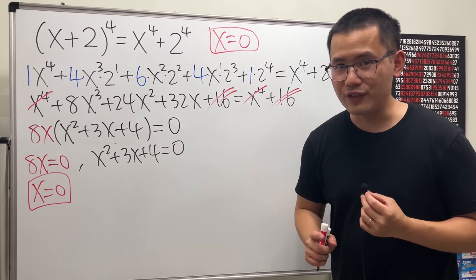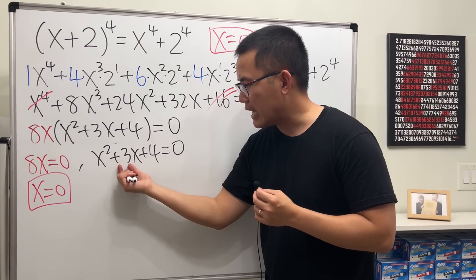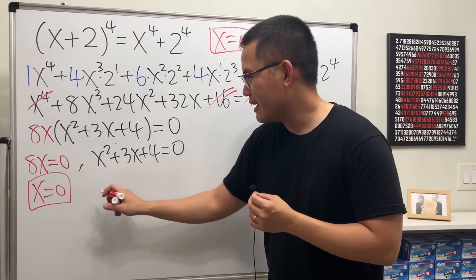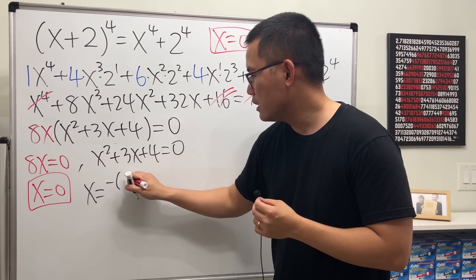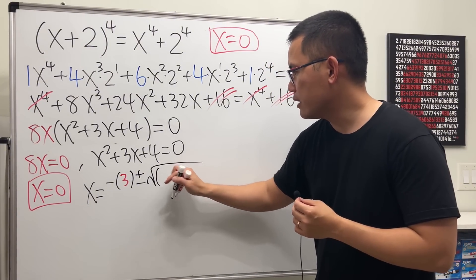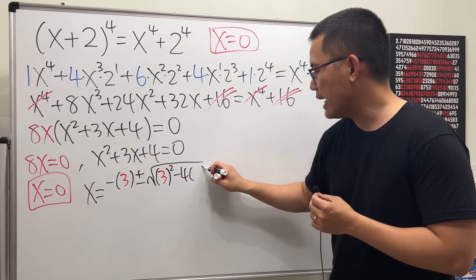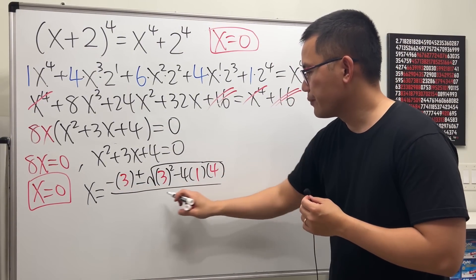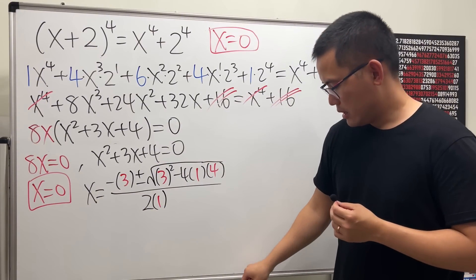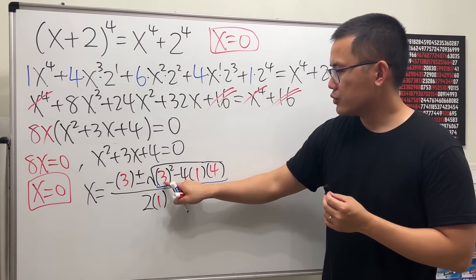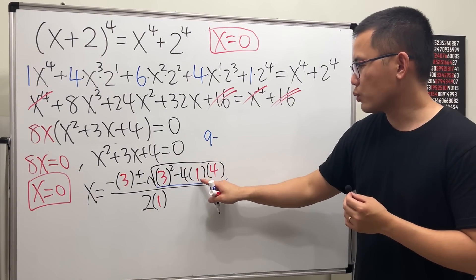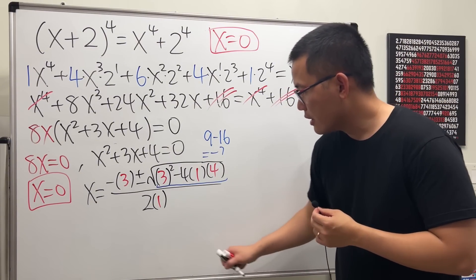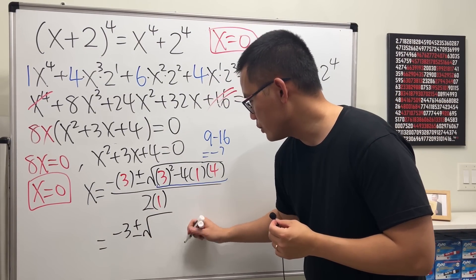For x²+3x+4=0, we use the quadratic formula because the coefficient of x is an odd number and completing the square would give fractions. The quadratic formula gives x = negative b plus or minus square root of b²−4ac, all over 2a. Here b=3, a=1, c=4. Inside the square root: 3²−4(1)(4) = 9−16 = negative 7.